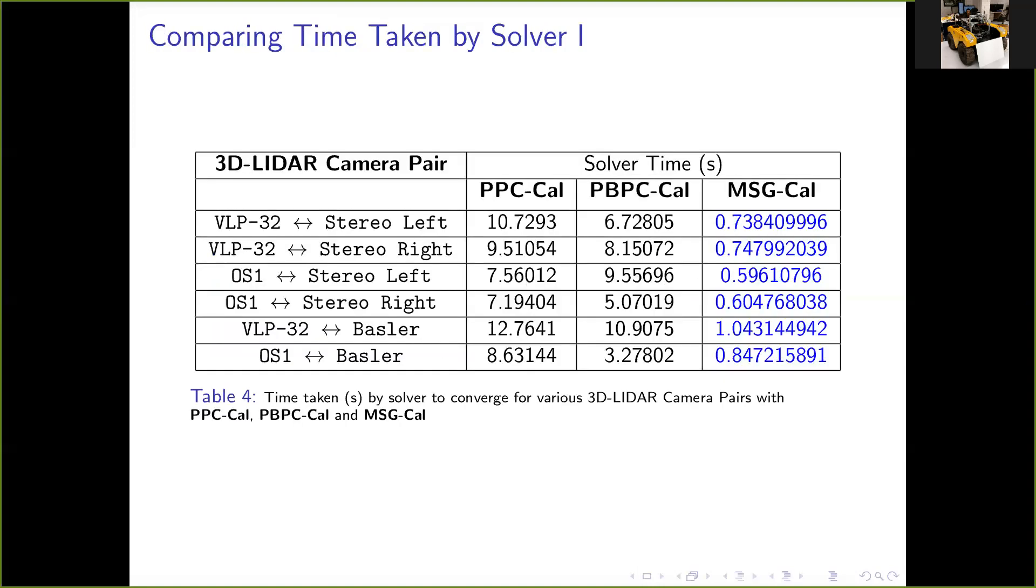The comparison Table 4 shows the time taken for convergence in all the sensor pairs with all the three methods. Clearly, MSG-Cal takes significantly less time. And this is because PPC-Cal and PBPC-Cal explicitly use the LIDAR points in the optimization procedure, while MSG-Cal uses plane parameters derived from these points. Therefore, the number of residuals in MSG-Cal is significantly less, which explains why it takes the least time to converge to a solution.